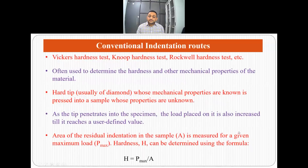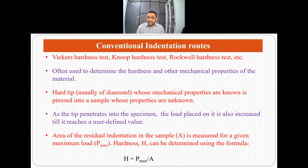There were different conventional indentation routes which are used today and have been used for a long time — that is Vickers hardness, Knoop hardness, Rockwell hardness, and so on. These conventional indentation routes were used, and are currently used, to determine the hardness and other mechanical properties of a material.